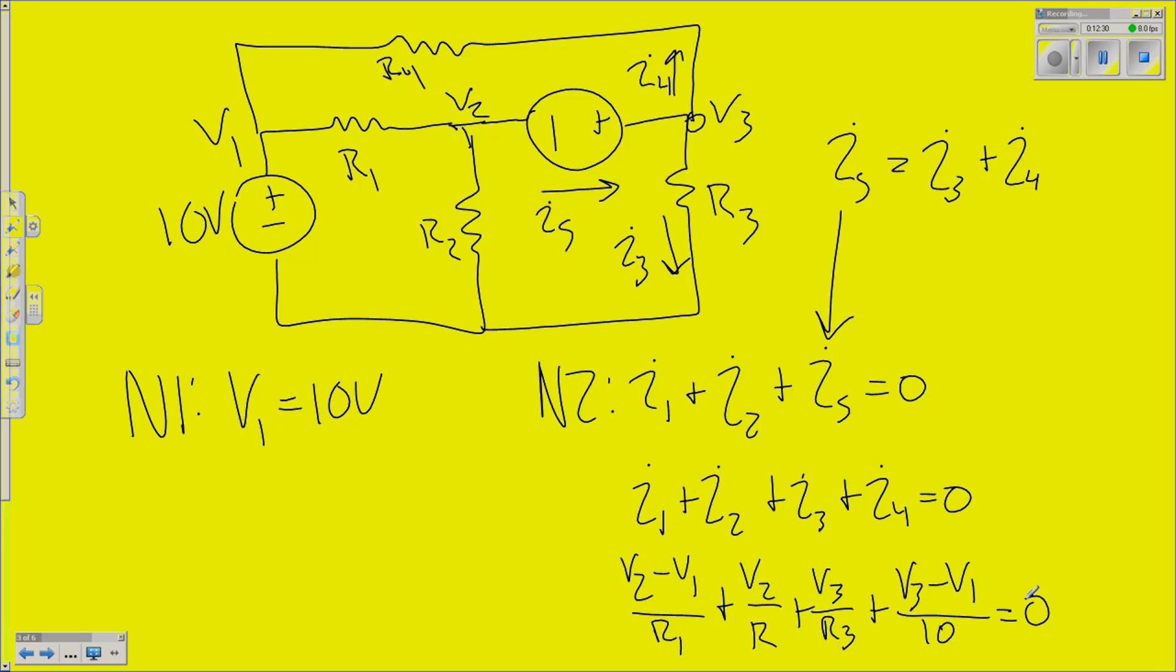So, how about node 3? Node 3 is just going to be easy again. Think about this critically. V3 is just V2 plus whatever the source is. Let's say it's 5 volts. And then you have V3, and we can sub that in, do our matrix math, and voila! That is how you solve for a supernode!